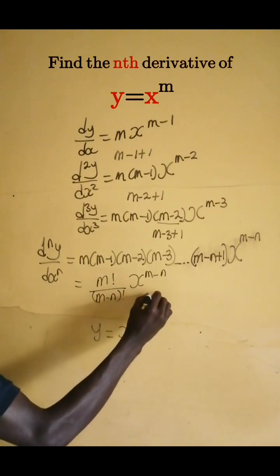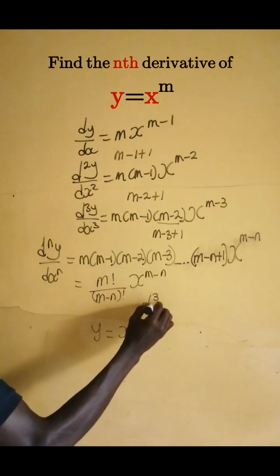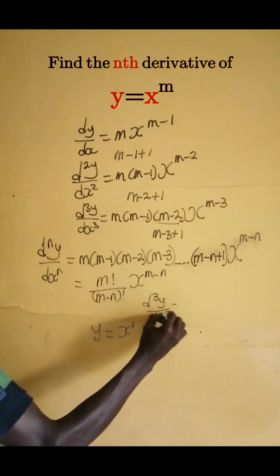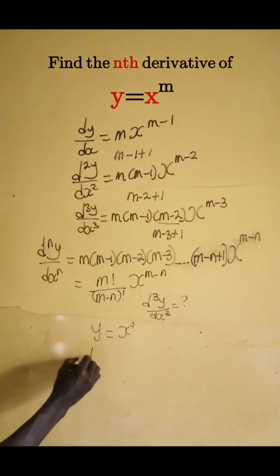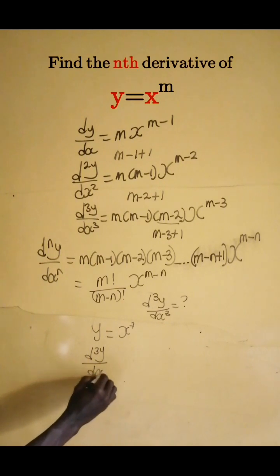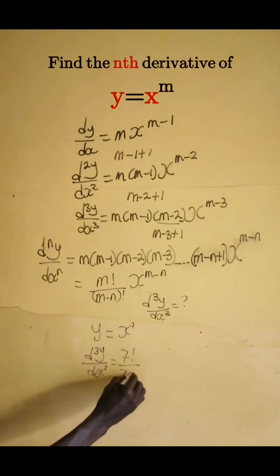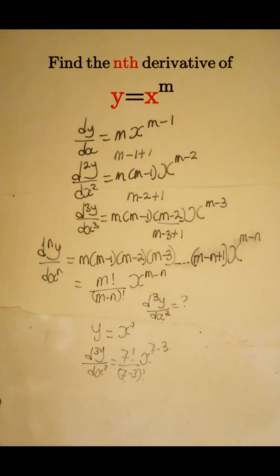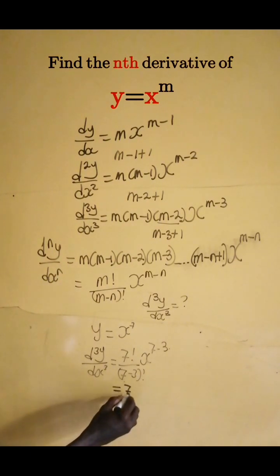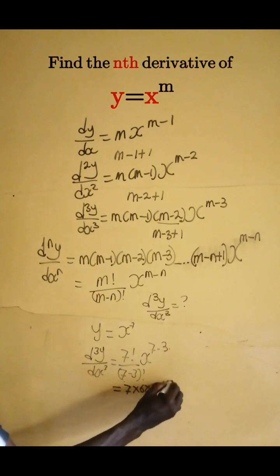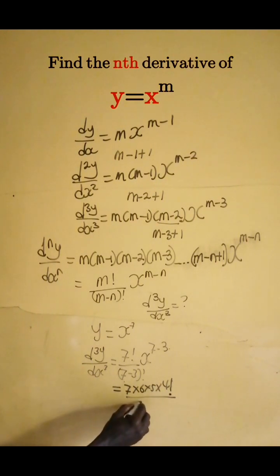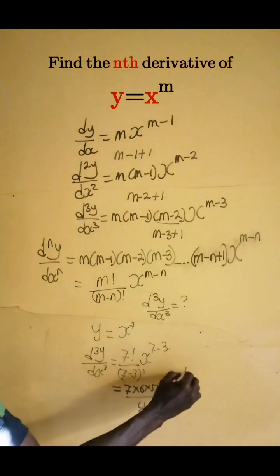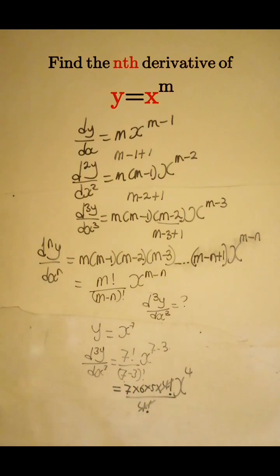For instance, if y equals x to the power 7 and we want to find d³y/dx³, we use the formula: 7 factorial divided by (7 minus 3) factorial times x to the power (7 minus 3). Now 7 factorial is 7 times 6 times 5 times 4 factorial, divided by 4 factorial. The 4 factorials cancel, giving 7 times 6 times 5, which equals 210, times x to the power 4.